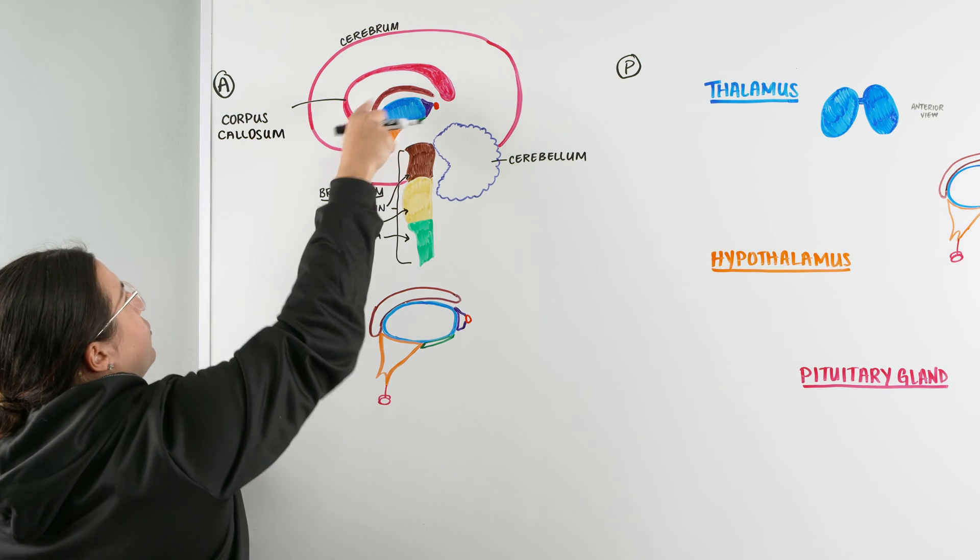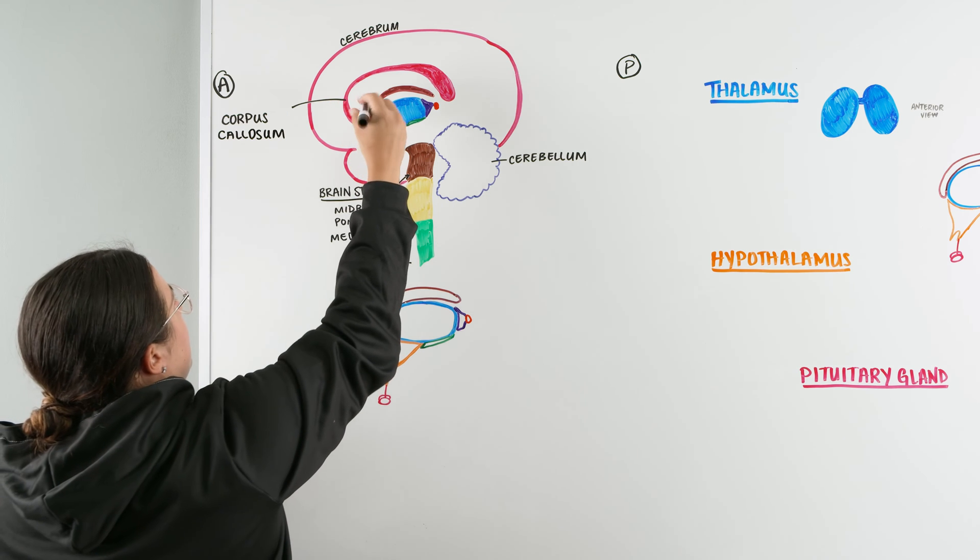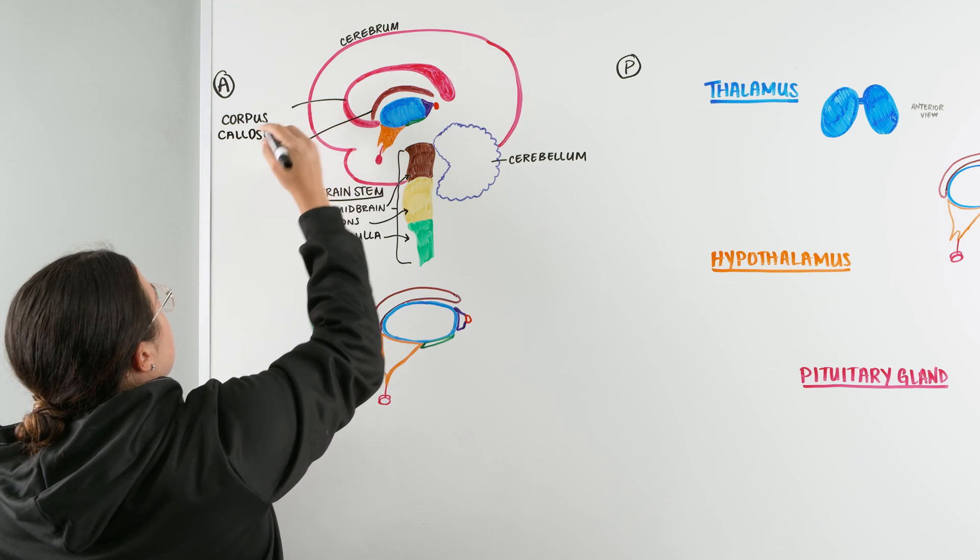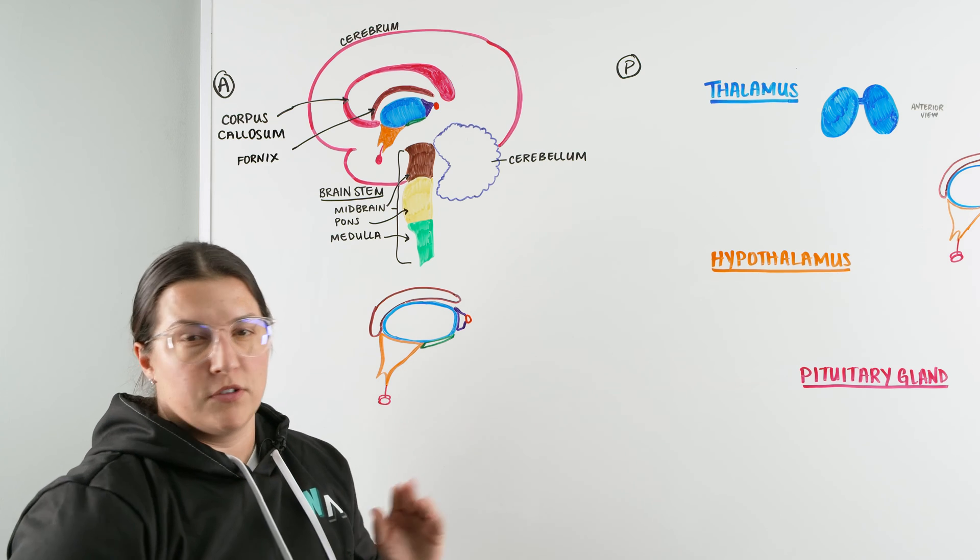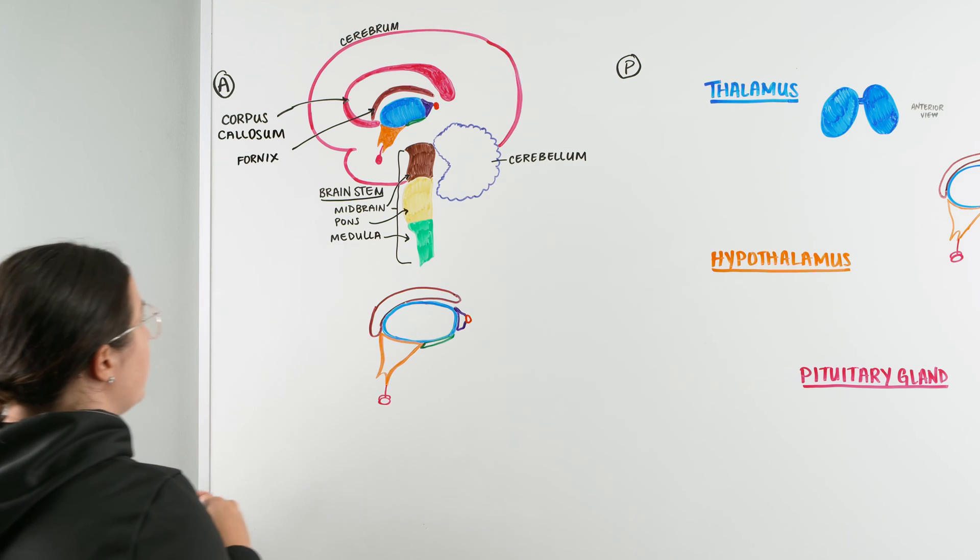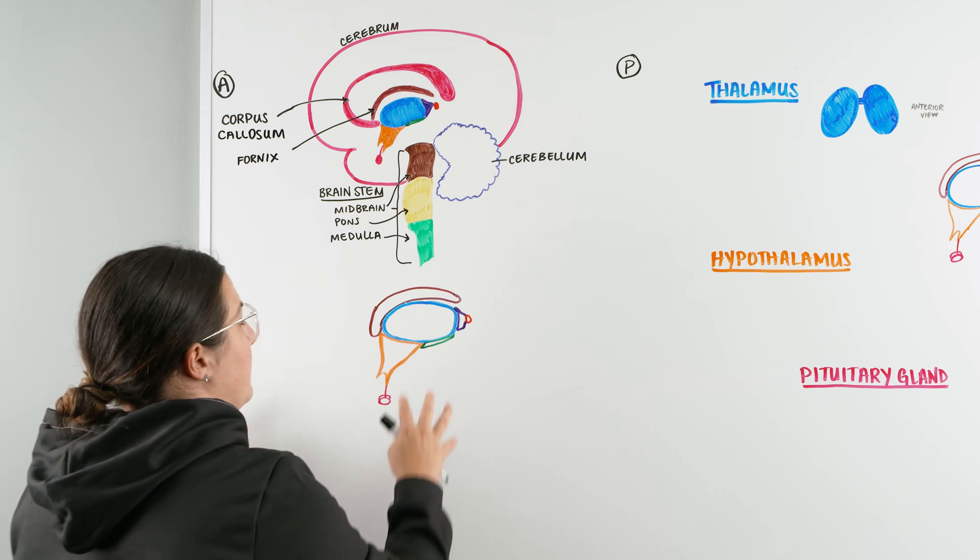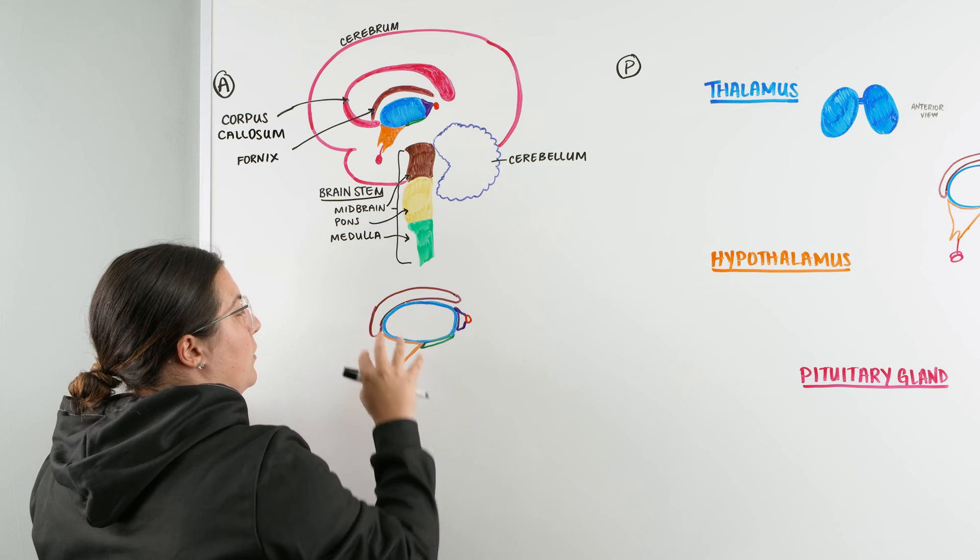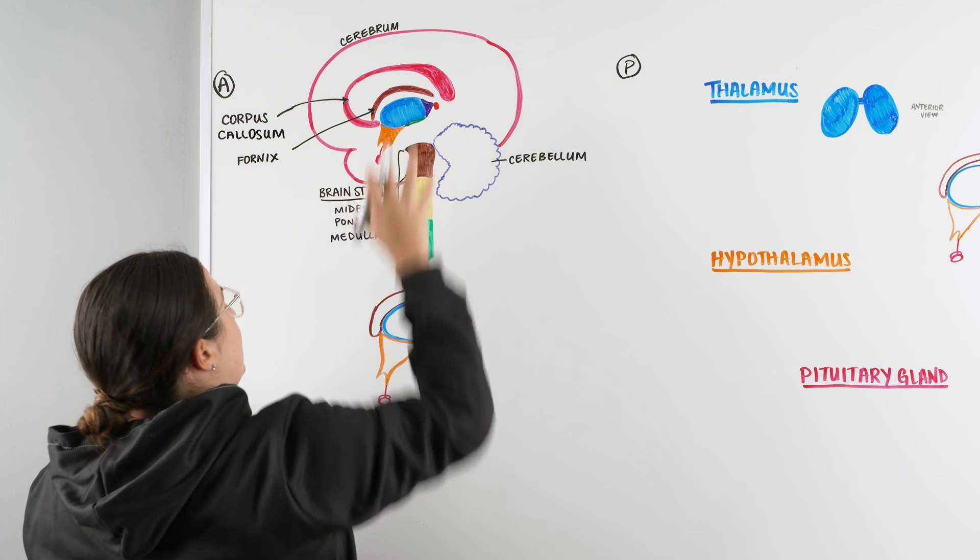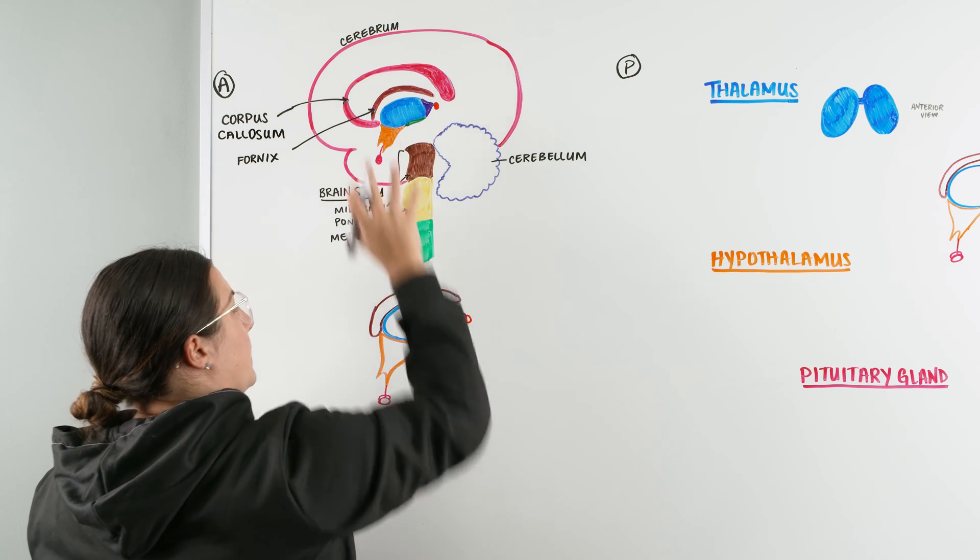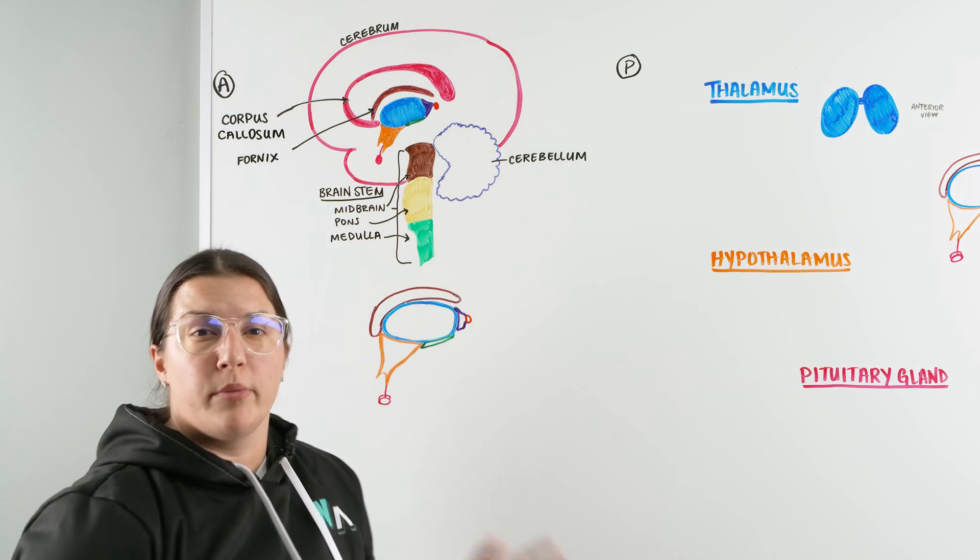Underneath that is this darker brownish red color here, and we call this the fornix. The fornix is also white matter, it allows for different types of communication as well. And then we have our area that we really want to talk about right in here, which is our diencephalon. So down here is the same drawing as up here. We're going to talk about both so we just understand a little bit of orientation.